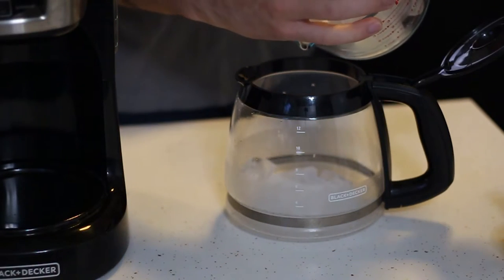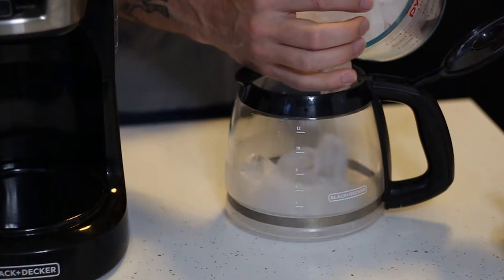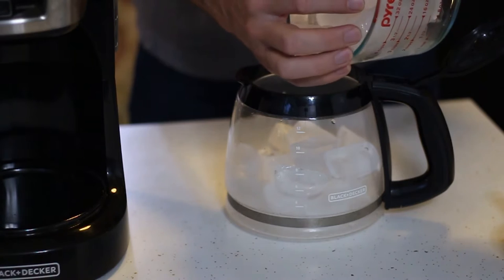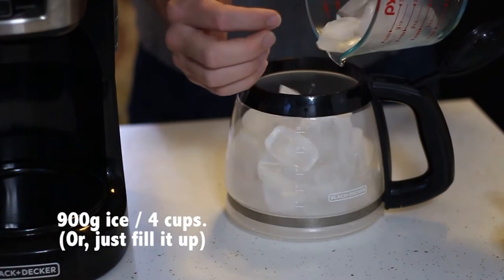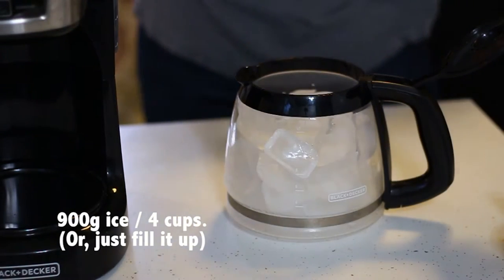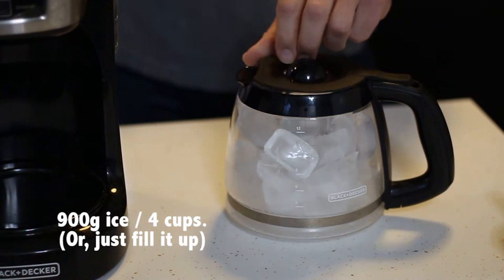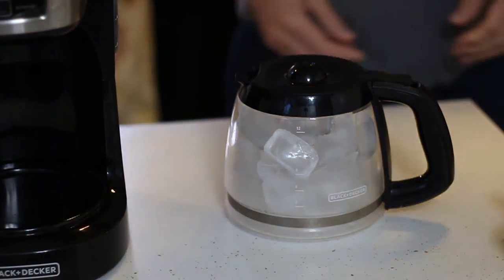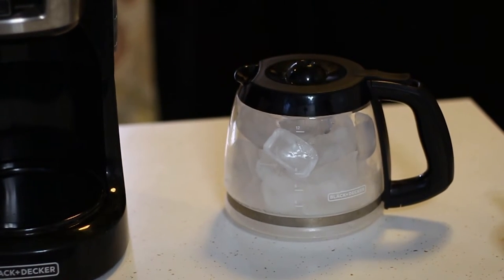Now, this is the key. This is the secret to good iced coffee. Essentially, what we're doing here is we're adding ice into our pot so that when the hot coffee comes in contact with this ice, it cools instantly. But, because we only used half of the amount of water, we're essentially making a concentrate. When it hits that ice and that ice melts, you have your regular strength coffee.